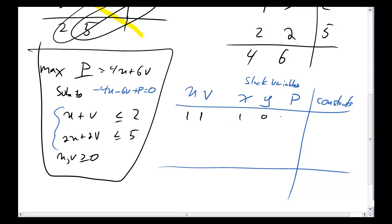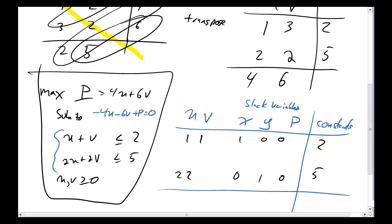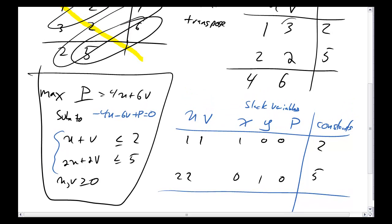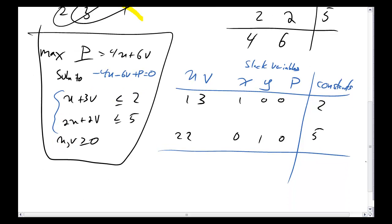Now it's time to enter in the values. The first row is: 1, 1, 1, 0, 0, and 2. The second row has 5 — wait, let me correct that: there's a 3 here, so this entry should be a 3 as well. The bottom row is: minus 4, minus 6, 0, 0, 1, 0.